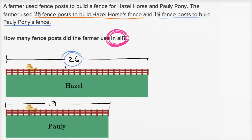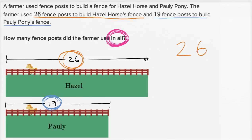We're going to add 26 plus 19. The 26 is in that brownish color — that's the 26 fence posts to build Hazel Horse's fence. And we're going to add that to 19 for Polly Pony. We want to add them because we're saying how many fence posts were used in all, or in Hazel's and Polly's fences. So let's add these two together.